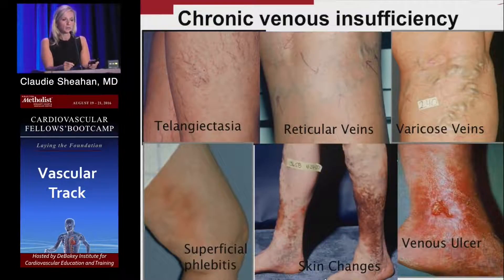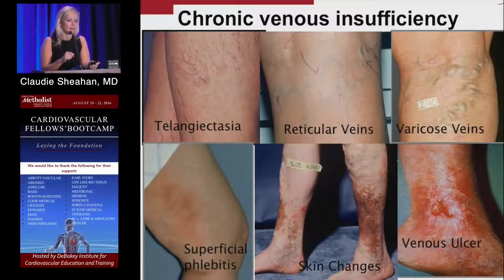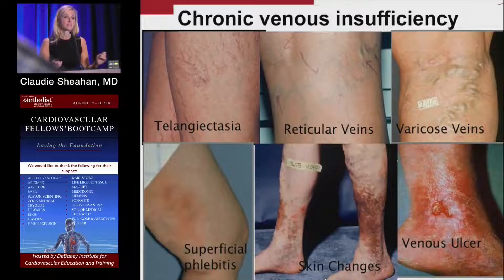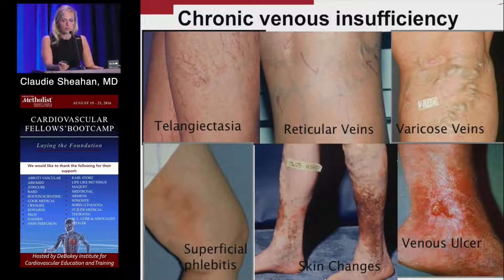Patients will present to you with the earliest forms of venous disease, like telangiectasias or spider veins, reticular veins, varicose veins, or even worse forms of venous disease like thrombophlebitis, DVT, ulceration, recurring ulceration, and pigmentation changes in the skin.